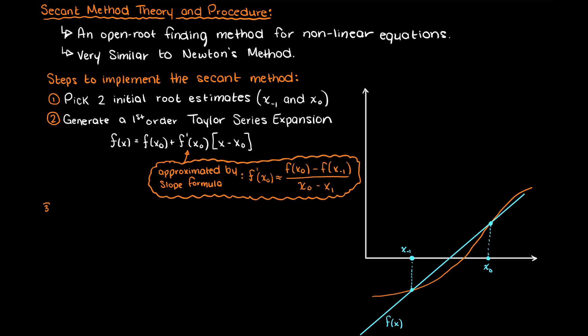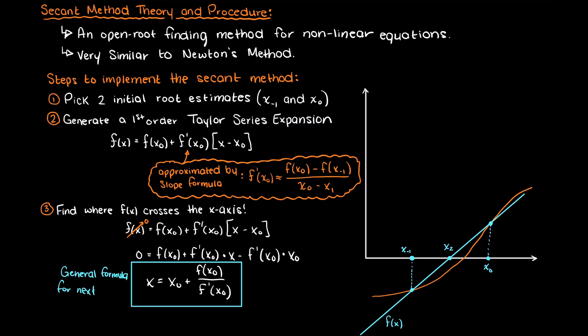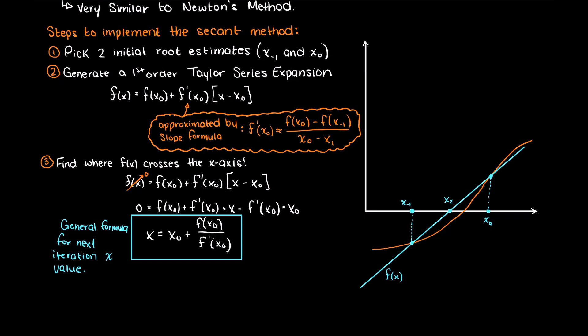Step 3, we must find where the secant line crosses the x-axis, just like we did in Newton's method. We set our output to zero, then expanding we can isolate our function for the input that gives us an output of zero. Now the x value that we find here is our next iteration's x value.